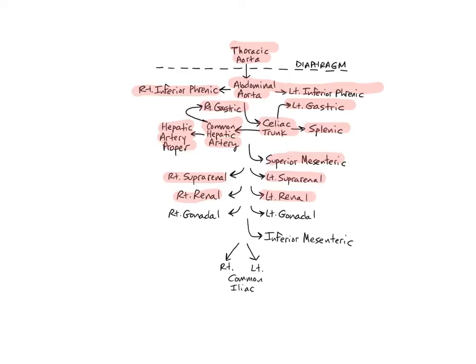The paired right and left gonadal arteries branch off the front of the abdominal aorta near L2, just below the renal arteries. The word gonadal refers to the reproductive organs which these arteries supply. In women, the gonadals are called the ovarian arteries, and supply the ovaries, fallopian tubes, and ureters. In men, the gonadals are called the testicular arteries, and are longer than the ovarian arteries, descending into the scrotum to supply the testes, epididymis, ductus deferens, and ureters.